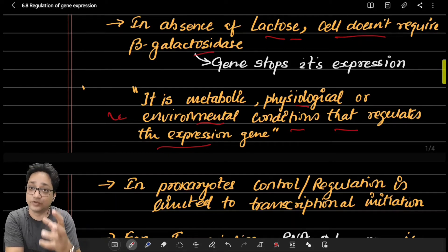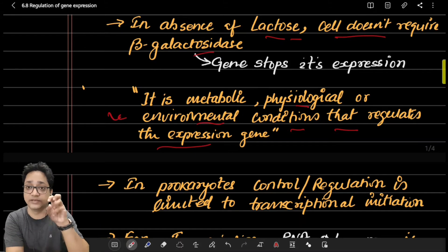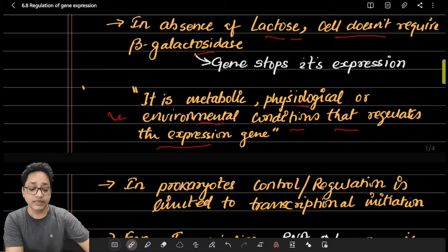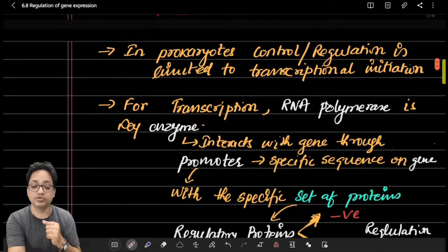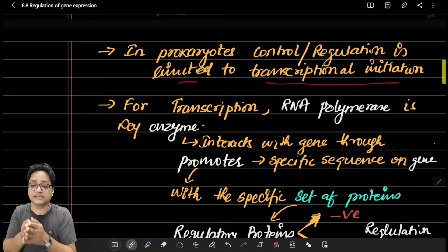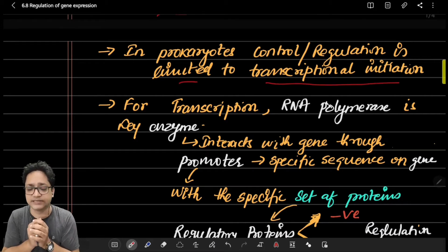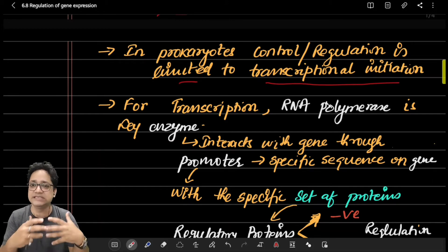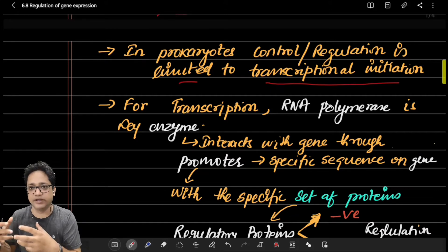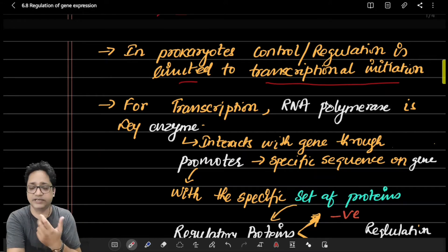Metabolic, physiological, and environmental conditions regulate gene expression. Physiological growth — like an embryo developing into a complete adult individual — controls expression of growth factors. Cell division is fast at some stages and regulated at others. In prokaryotes, control and regulation is primarily limited to transcriptional initiation. In today's class we will discuss only transcriptional-level gene regulation.